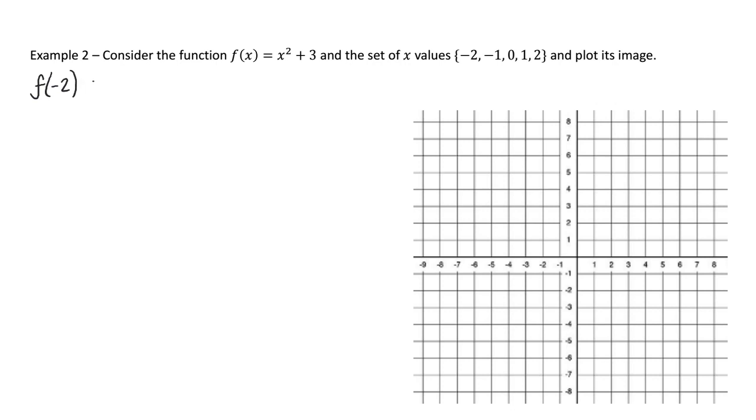So I'll start at negative 2. We've got f of negative 2 is going to be negative 2 squared. So I'm replacing, where I've replaced the x, I've replaced the x again on the other side, plus 3. Be careful with this. Remember, if you are squaring a negative number, then your answer will be positive. So negative 2 squared is 4, add 3 is 7. So my first coordinate is going to be negative 2, 7. f of negative 1 is going to be negative 1 squared plus 3. So negative 1 squared is 1, add 3, will give me 4. So my second coordinate is negative 1, 4.